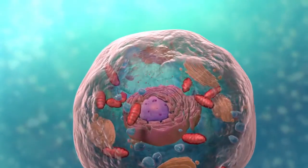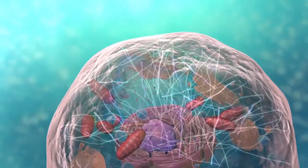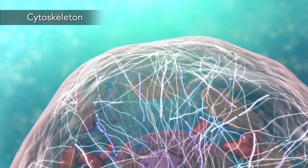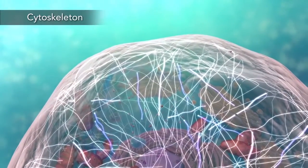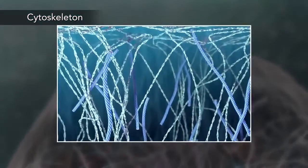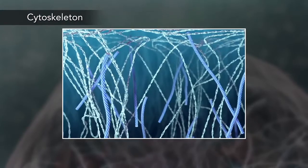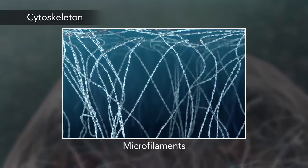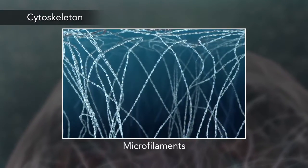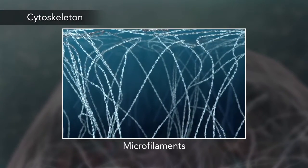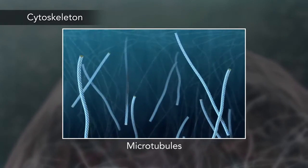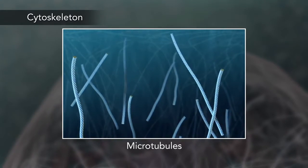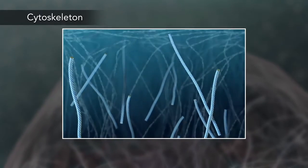Meanwhile, the cell maintains its shape through a cytoskeleton. The cytoskeleton includes thread-like microfilaments, which are made of protein, and microtubules, which are thin hollow tubes.